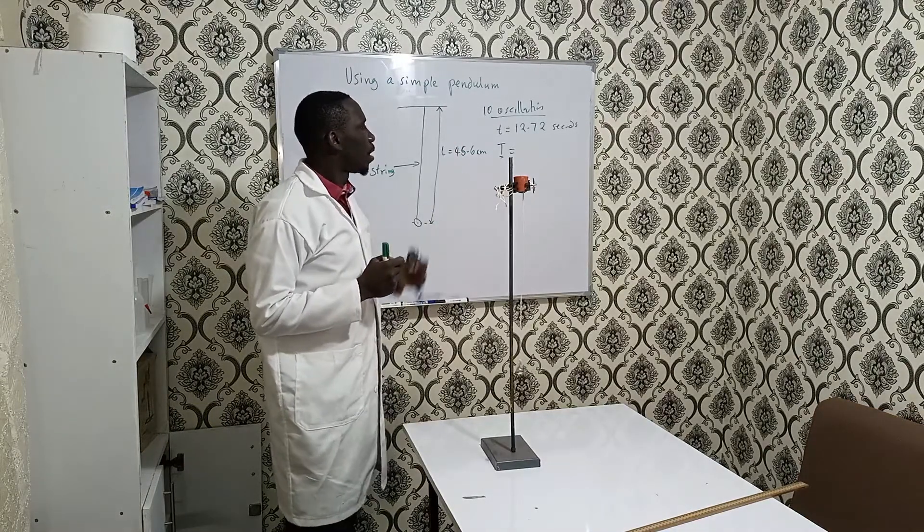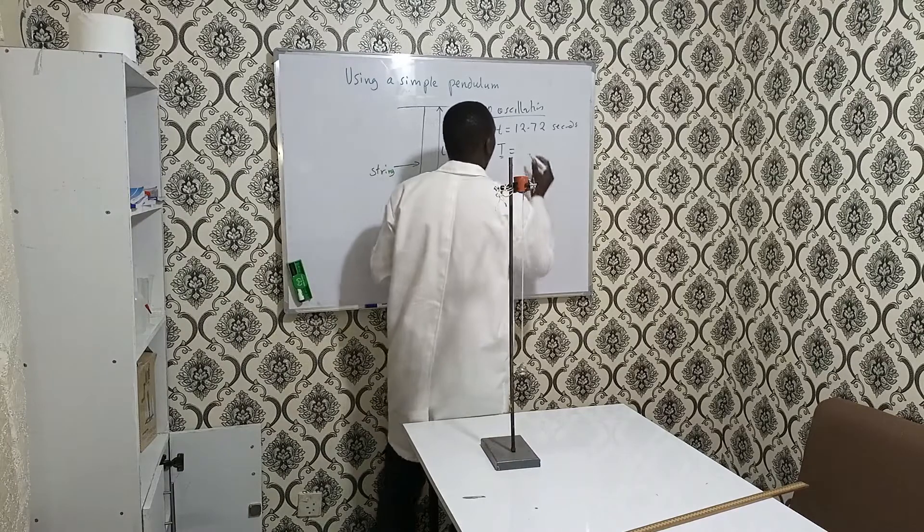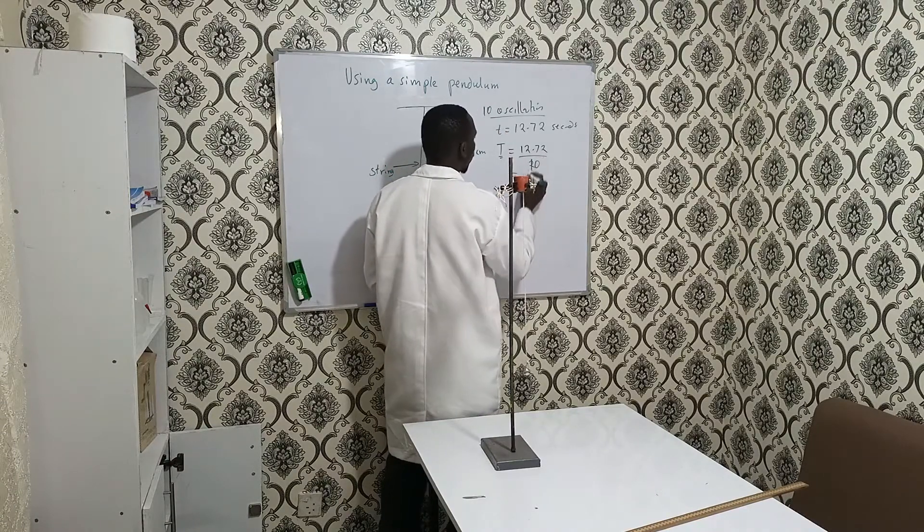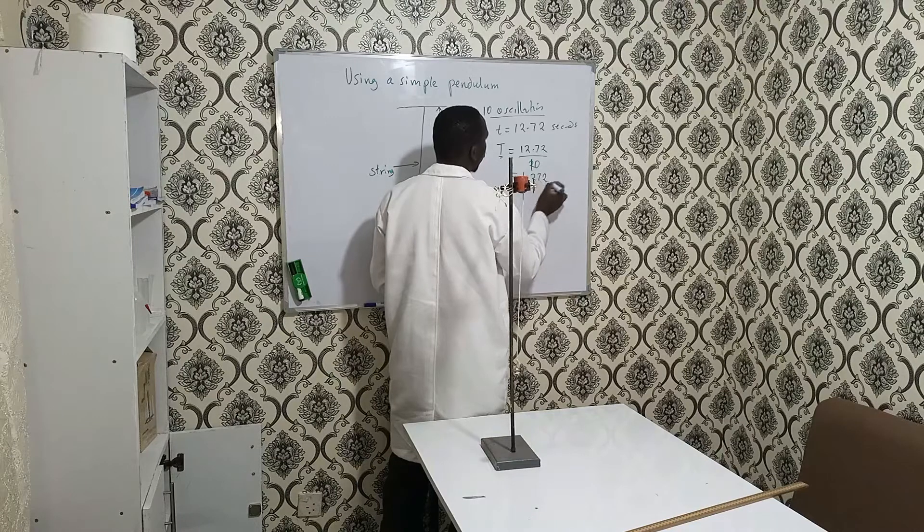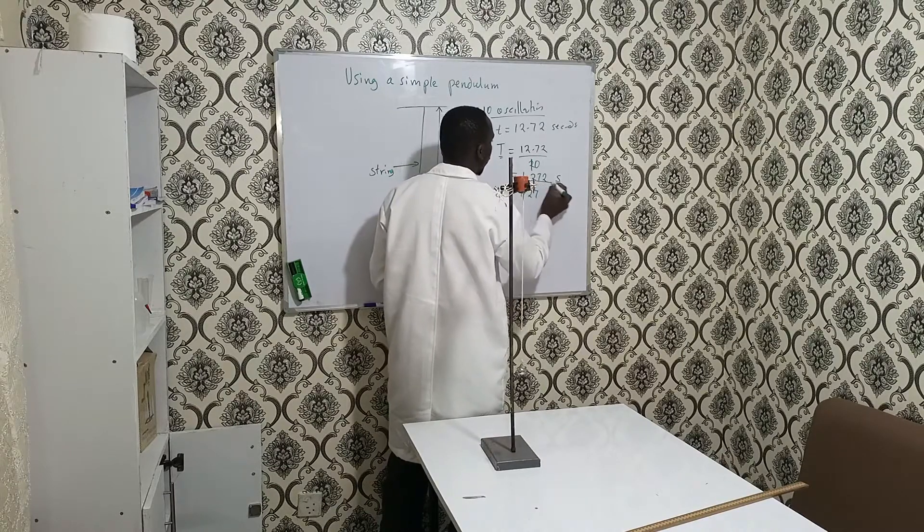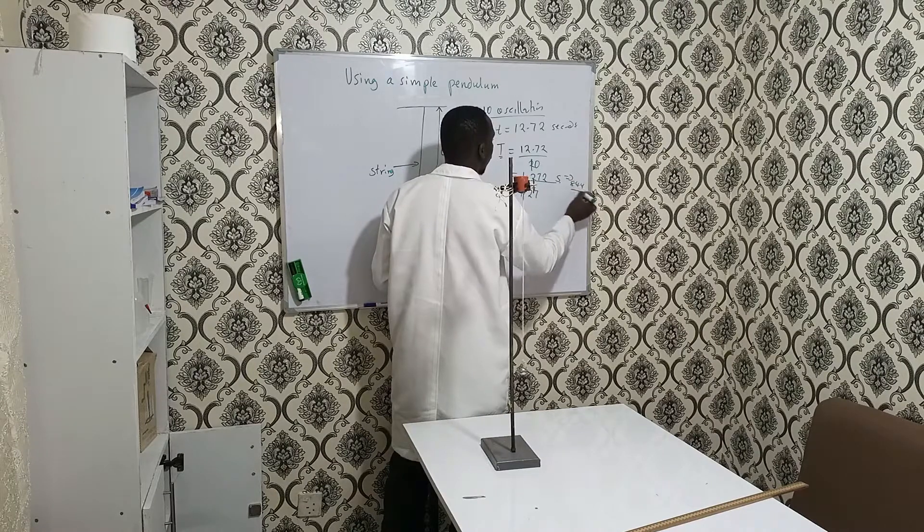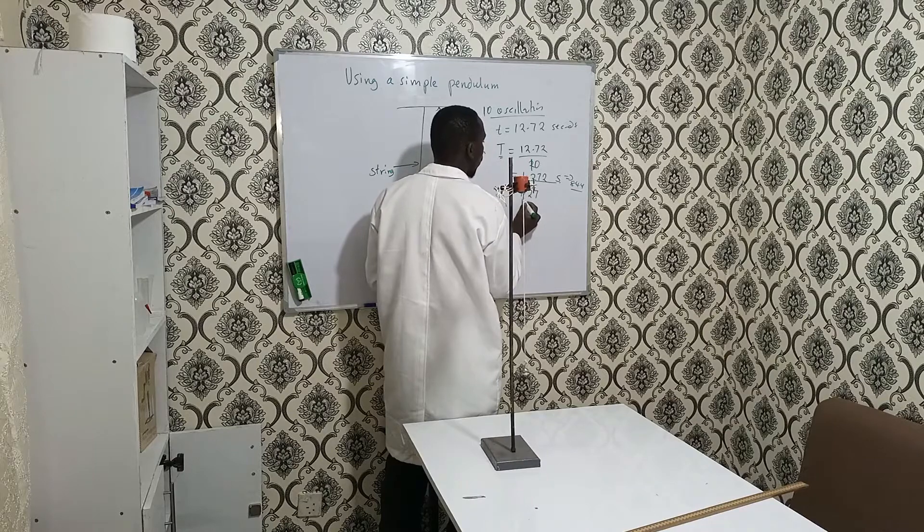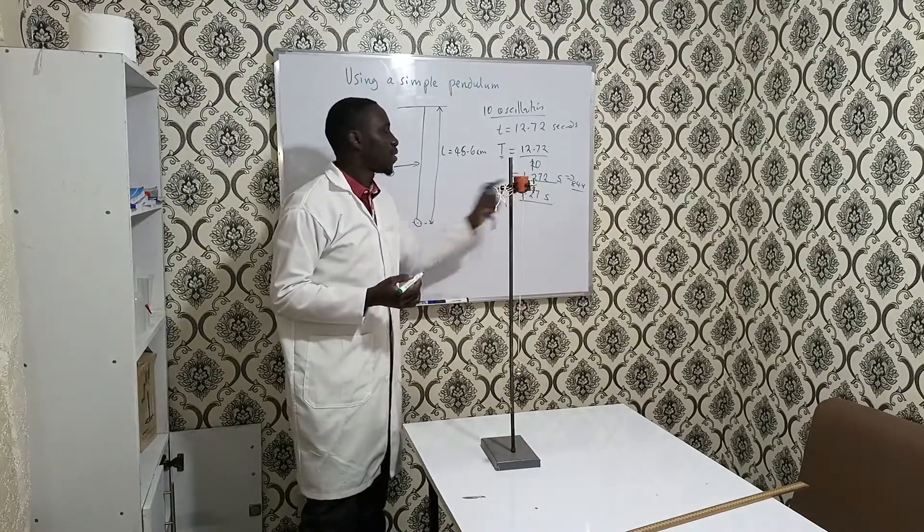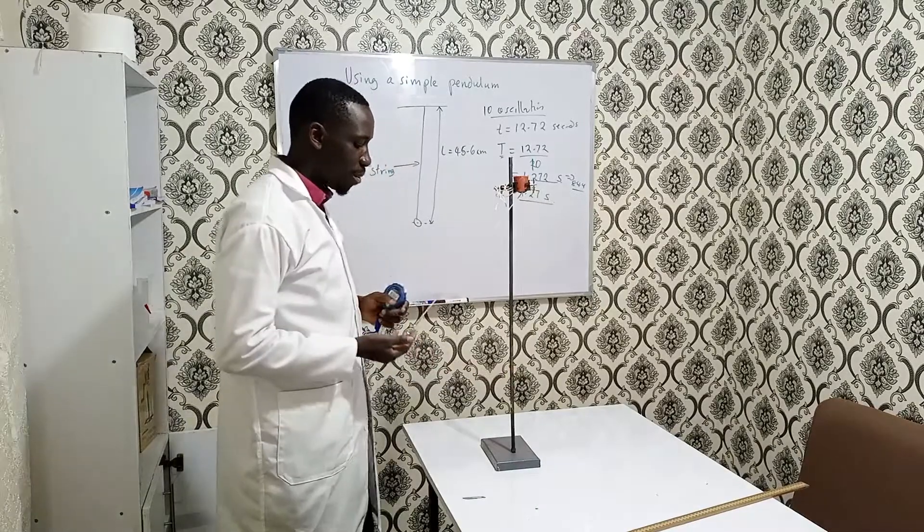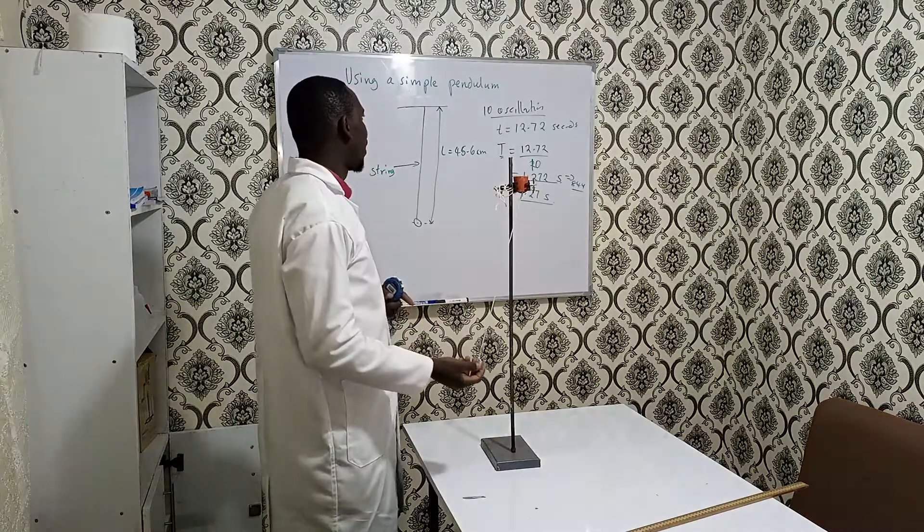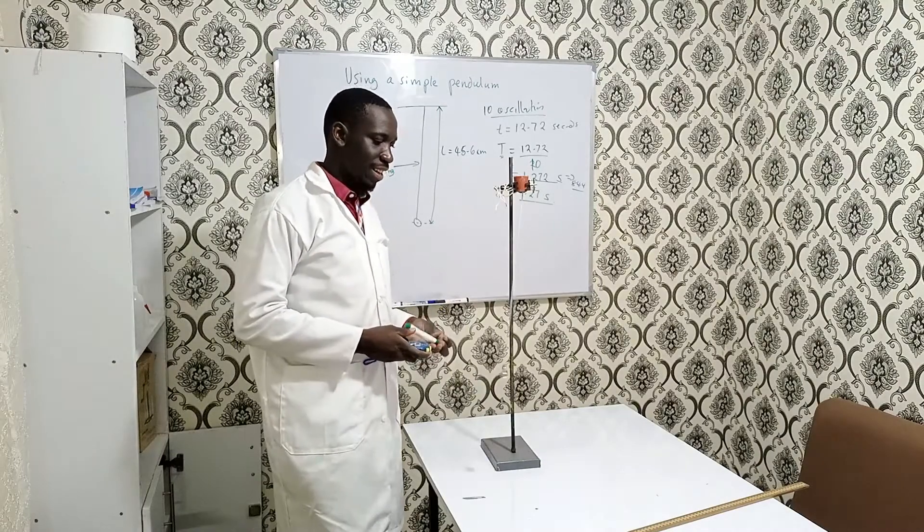From here, the time taken will be 12.72 divided by 10, the number of oscillations. That will be 1.27 seconds, which we can give to three significant figures. For IG, it is acceptable to give your answer to three significant figures - 1.27 seconds. This is the time period, the time taken for one oscillation. That is, if you release the ball from here, the time it takes to move from here and come back, that is one complete oscillation. I hope you guys will not make such a mistake again.